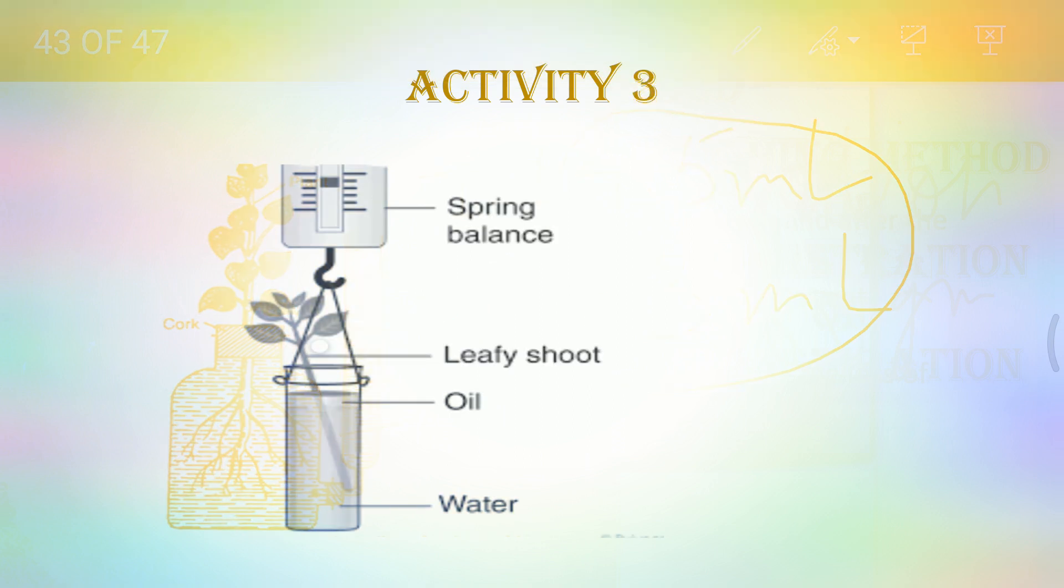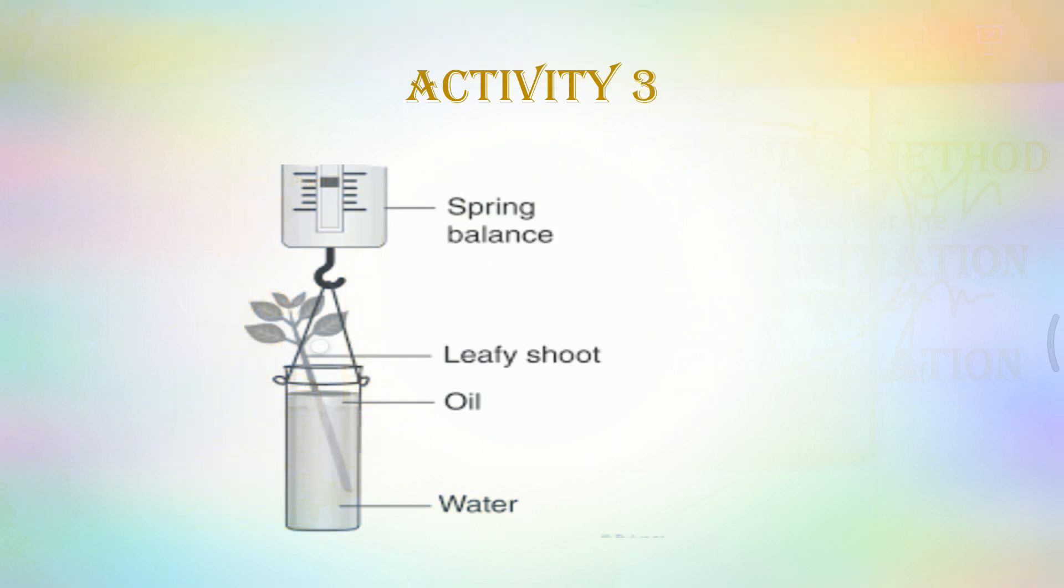And the third experimental setup is also there. The difference in first and second experimental setup was that we were weighing the entire plant for the first setup. In the second setup we used the graduated tube and read the markings of milliliters. Whereas in the third experimental setup we take the entire plant in a test tube or a beaker and then add a layer of oil over it. Again the same reason, no evaporation of water will be allowed in this process. So there will be only chance of the leaves for the process of transpiration.